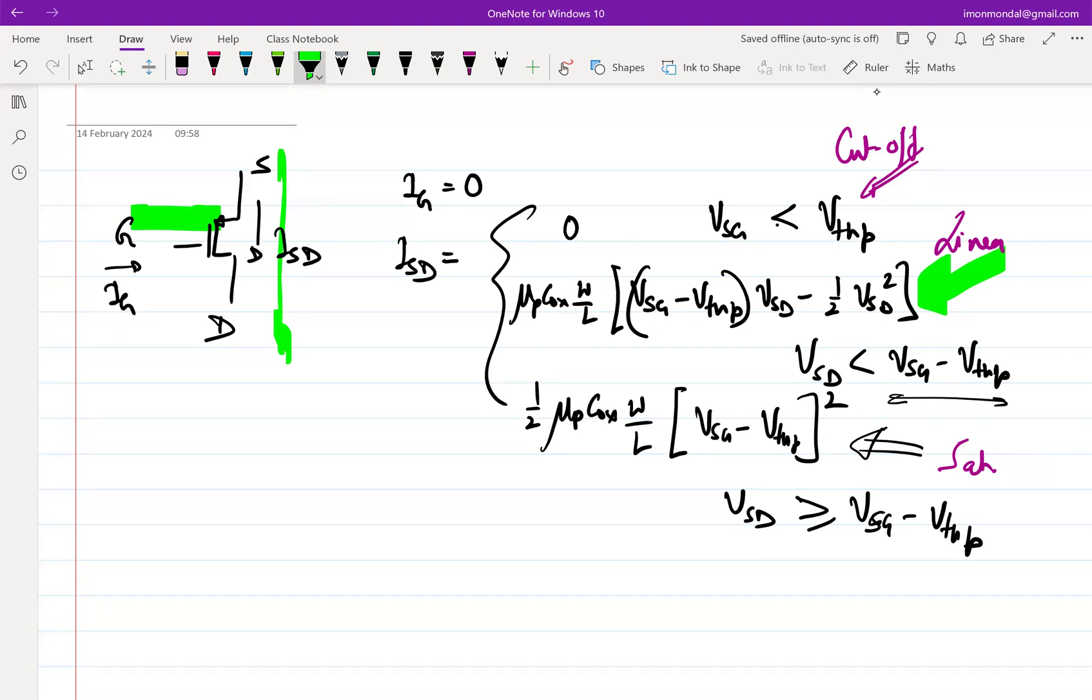The gate to source voltage or source to gate voltage controls the flow of charges from source to gate. That's all this is doing. And if we can make an amplifier using the same...